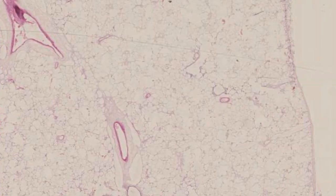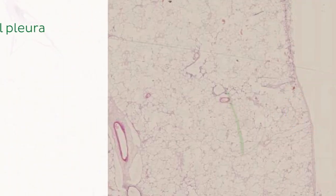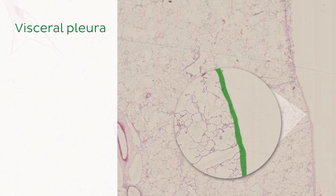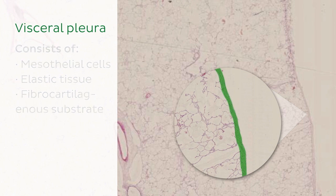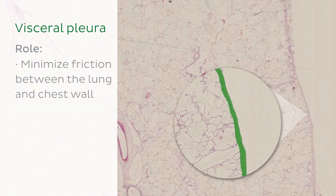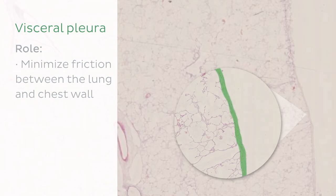There's another element you should be able to recognize when looking at a lung slide, and this is the visceral pleural membrane. In this image we can see that we've highlighted the visceral pleura, which is the portion of the pleura covering the lungs. The visceral pleura consists of mesothelial cells, elastic tissue and a sparse fibrocollagenous substrate mainly around blood vessels and lymph vessels. Its role is to minimize friction between the lung and the chest wall, which is also lined by another pleural membrane, the parietal pleura.